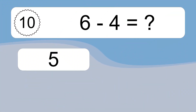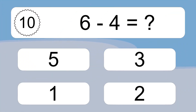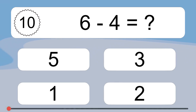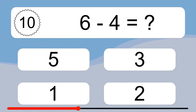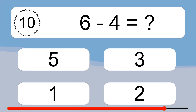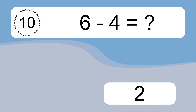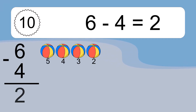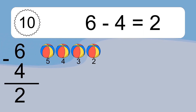6 minus 4 equals what? 6 minus 4 equals 2. Let's count it. 5, 4, 3, 2.